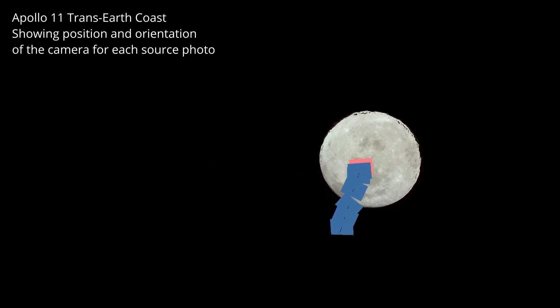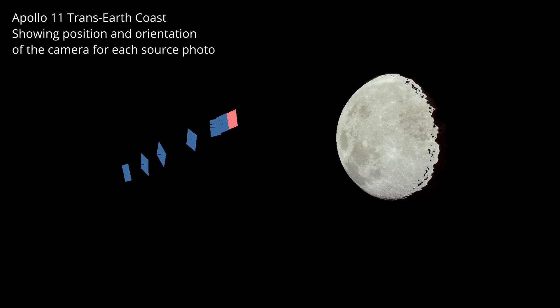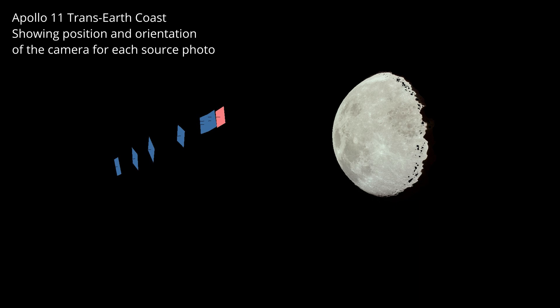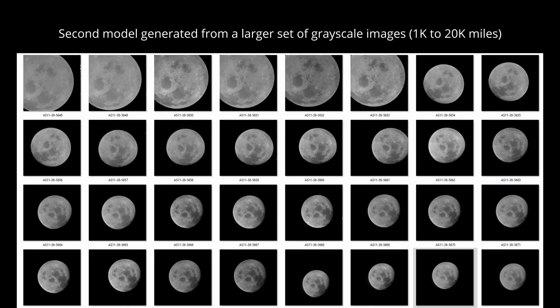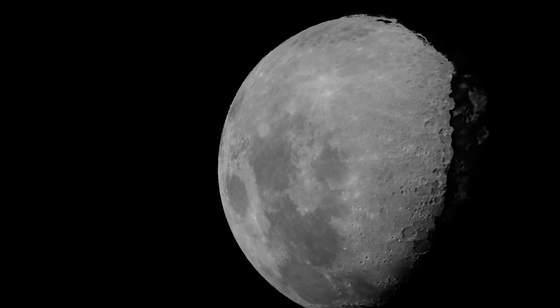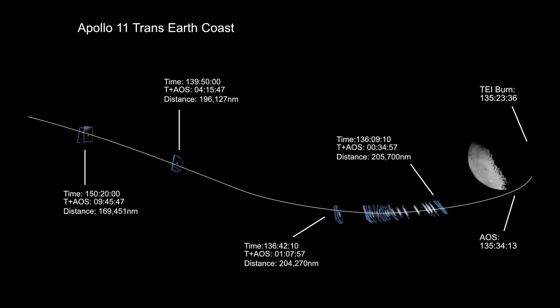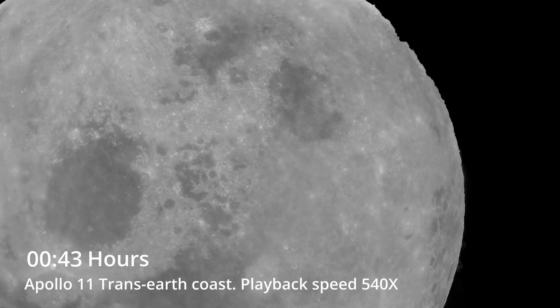The software has to calculate the location of the camera for each photo in order to build the 3D model, so we can actually see part of the trajectory of the spacecraft returning to Earth. I built another model using a set of black and white images of the trans-Earth coast and got this sequence. Using mission log transcripts I found online, I was able to map approximately when each photo was taken and compare that to the trajectory. This sequence begins at about 1,000 miles from the moon and extends out to about 20,000 miles over a period of nine hours.